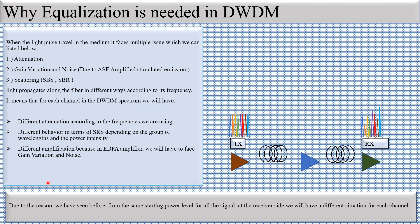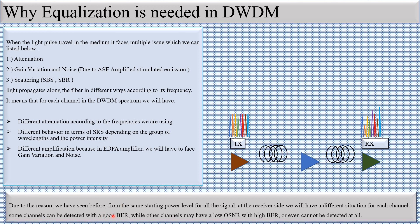Starting from the same power level for all signals at the transmission end, at the receiver side we will have a different situation for each channel. You can see that the same transmission power is used for all channels, but as they travel together through the fiber medium, different wavelengths face different attenuation, different SRS behavior, and different amplification. At the receiver side, the received power of all channels is different — all wavelengths do not receive the same power. This causes a big issue: some channels can be detected at a good BER while other channels may have low SNR with high BER.